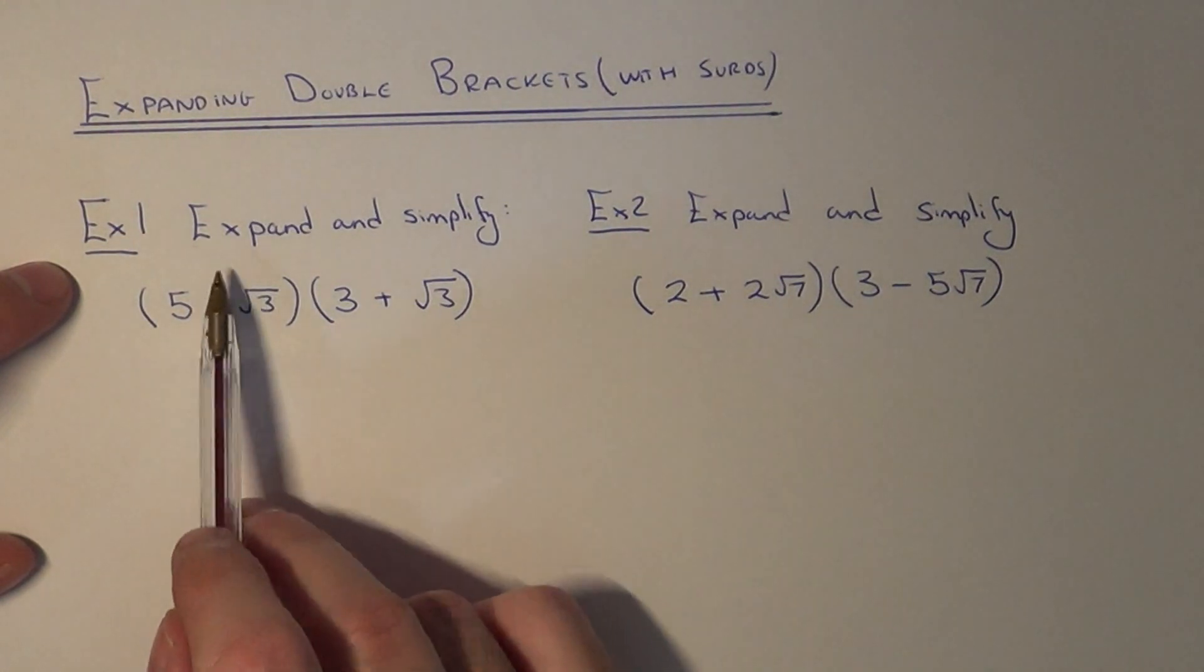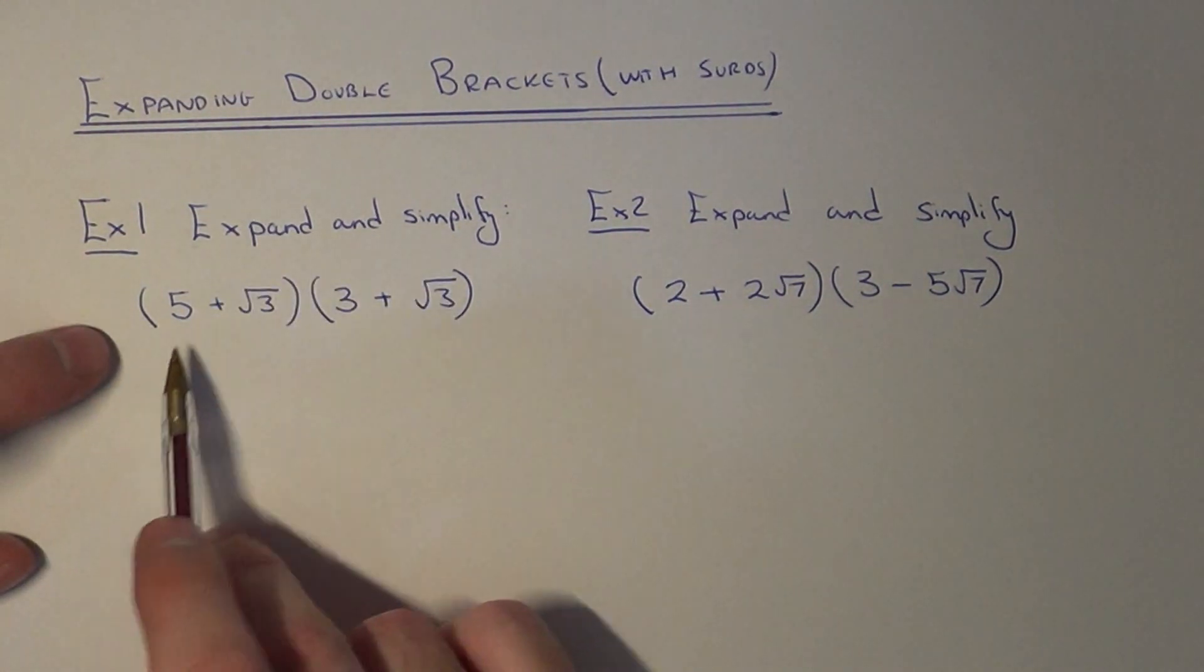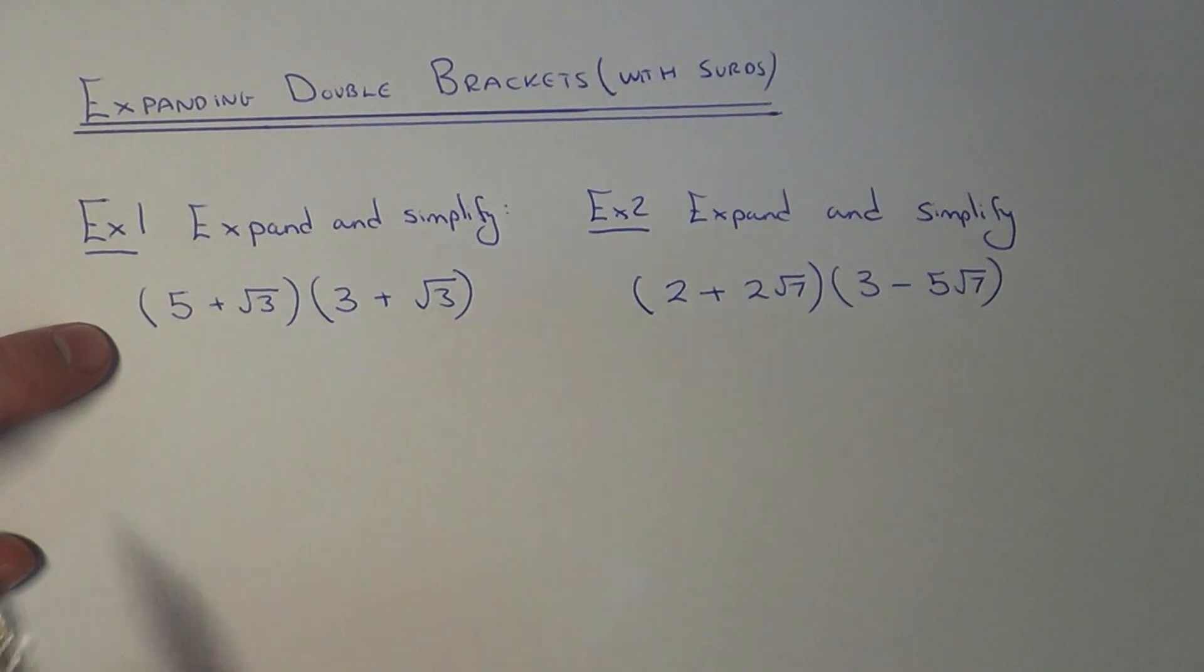So let's have a look at example 1. We need to expand and simplify 5 plus root 3 and 3 plus root 3.